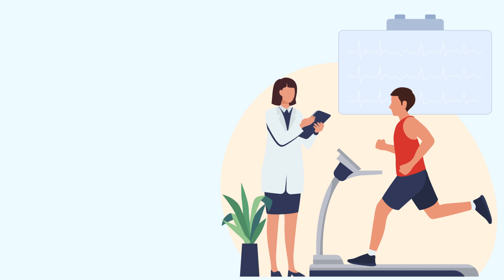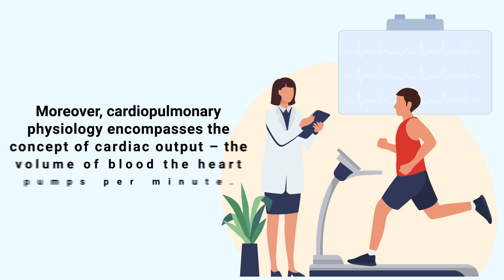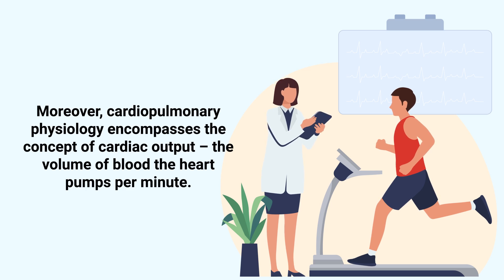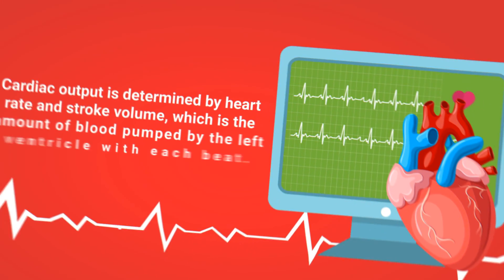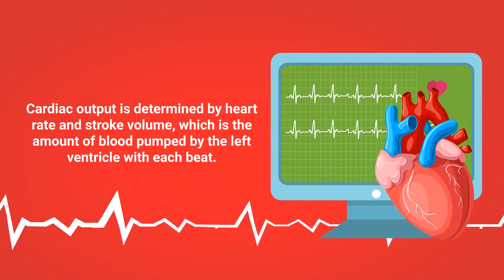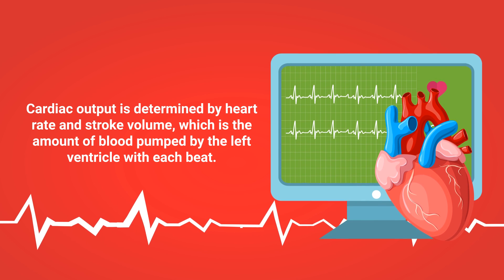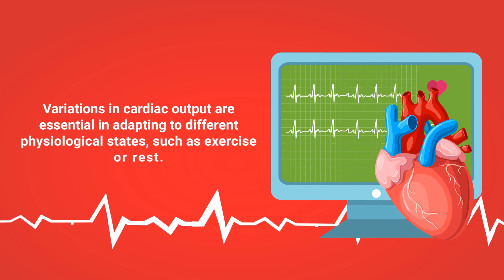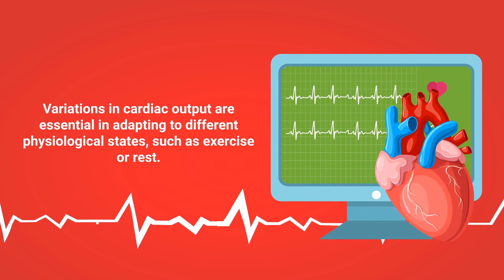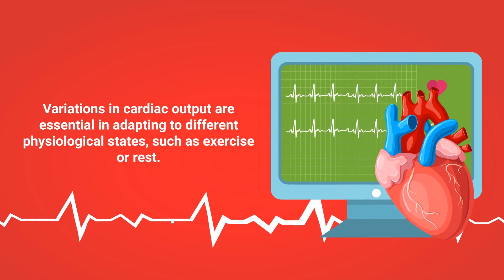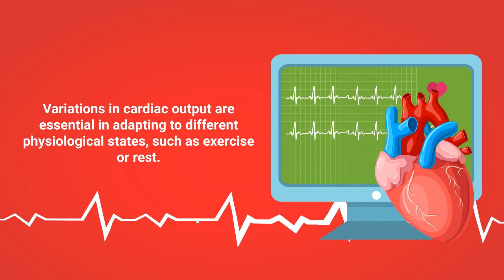Moreover, cardiopulmonary physiology encompasses the concept of cardiac output — the volume of blood the heart pumps per minute. Cardiac output is determined by heart rate and stroke volume, which is the amount of blood pumped by the left ventricle with each beat. Variations in cardiac output are essential in adapting to different physiological states, such as exercise or rest.